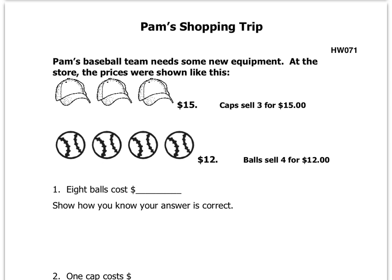Here we are on the back side with Pam's shopping trip. Pam's baseball team needs some new equipment. At the store, the prices were shown like this. Caps sell 3 for $15, so all 3 caps you get for a total of $15. Balls sell 4 for $12, so you get 4 balls in total for paying $12.